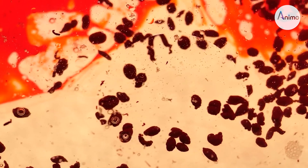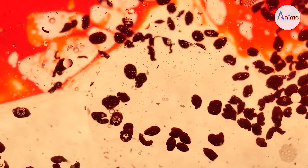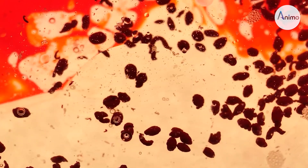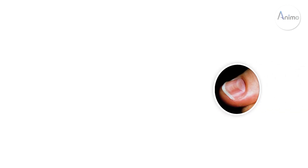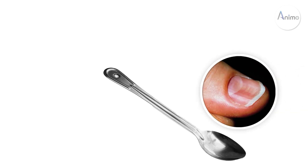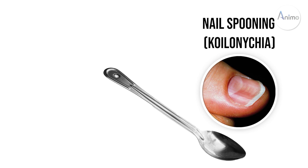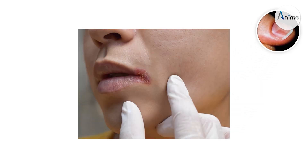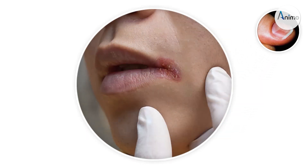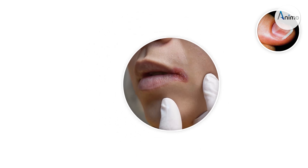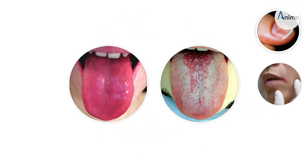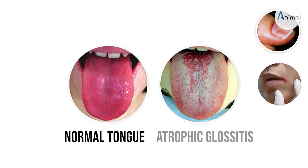Here are the gross features of what a patient with iron deficiency anemia looks like. The patient is pale, and the nails look like a spoon — this is known as nail spooning or koilonychia. The angles of the mouth are inflamed and cracked, which is known as angular cheilitis. There is also degeneration and inflammation of tongue tissues, known as atrophic glossitis.